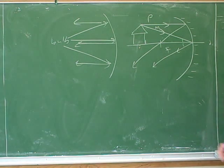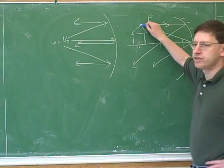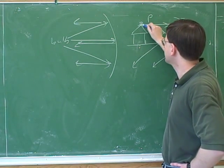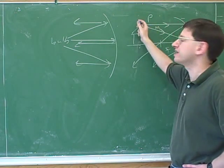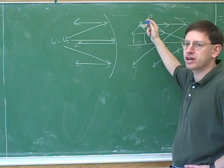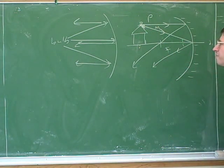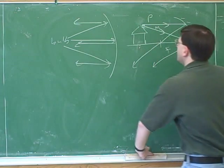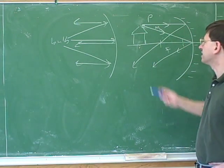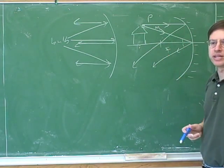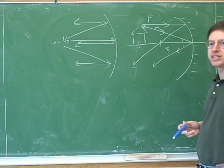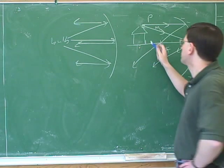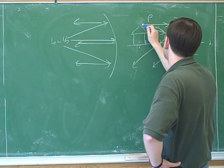However, obviously there's not only two rays going through this point — there's an infinite number of rays. It's just that we draw two of them. Well, it turns out there's one more ray that's good to know how to draw, and that's a ray that comes in through the focal point. We already drew a ray that went out through the focal point, but let's draw a ray that goes in through the focal point.